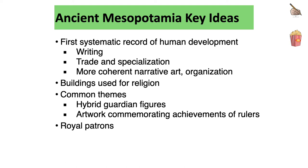Trade and specialization emerged. More coherent narrative art arises, and a common theme was war. The art also became more organized. Buildings were used for religion. Some common themes include hybrid guardian figures, and artwork commemorating the achievements of rulers. Royal patrons, like kings, are going to be commissioning a lot of the art.